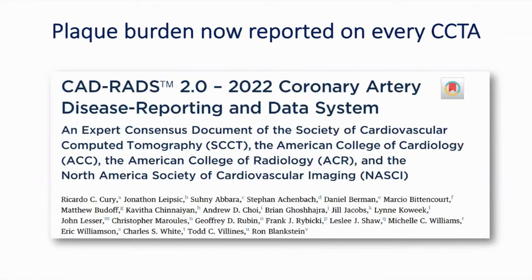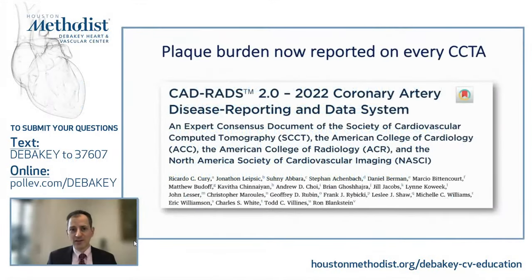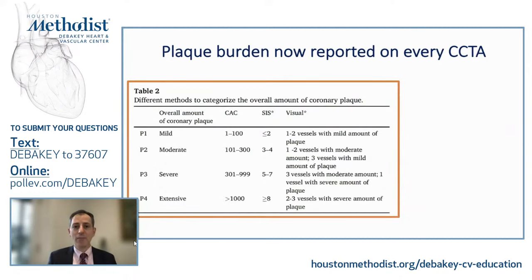Plaque burden is now something we should report on every coronary CTA. I helped lead the CAD-RADS 2.0 document — advice for imagers on how to report CTA findings. The first version focused only on stenosis. The biggest modification in version 2.0 is that we now state we should also report how much plaque individuals have. We recommend giving a P-score — P1, P2, P3, or P4 — as an estimation of plaque burden. This can be done quickly for every single coronary CTA.